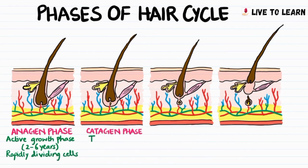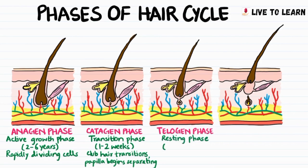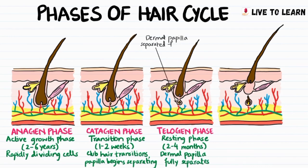Next is the catagen phase, which is a transition phase that lasts for 1–2 weeks. During this phase, the hair transitions upwards towards the skin pore and the dermal papilla begins to separate from the follicle. The telogen phase is the resting phase, which lasts for 2–4 months, and during this time the dermal papilla fully separates from the hair follicle, as shown in this diagram.